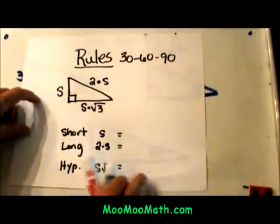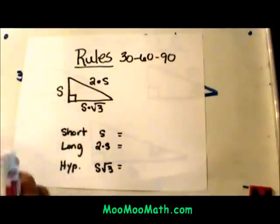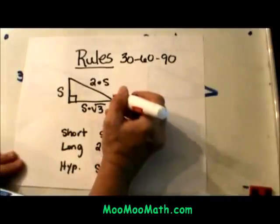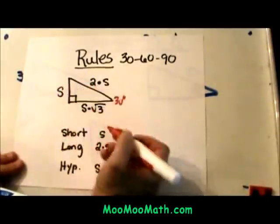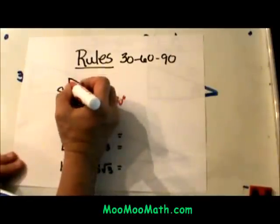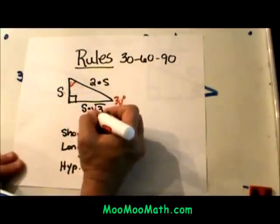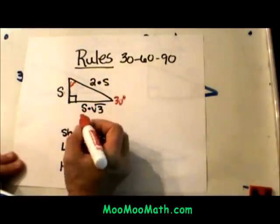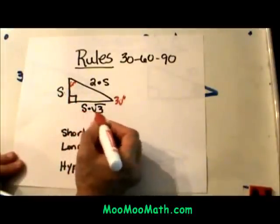The rules for 30-60-90 triangles are as follows. The short leg is always opposite the 30-degree angle. This is my short leg and we are going to call that S. The longer leg is always opposite the 60-degree angle. To find its side you are going to take the short side times the square root of 3.